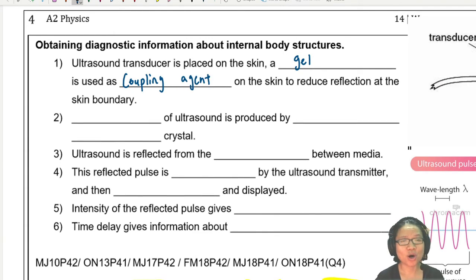A gel is used as your coupling agent on the skin to reduce reflection at the skin boundary. This is a very popular past year question. It can be a past year question on its own. So make sure you know how to do that question when it comes to calculation, using your specific acoustic impedance to find and decide why we use the gel. So right now, we gel the mother, we put the transducer on the skin and we are ready to send a pulse.